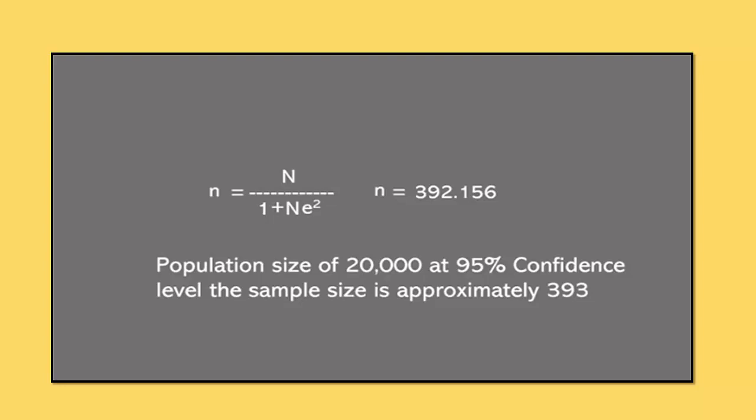Therefore when your population size is 20,000, means when your population is known and when it is finite at the 95% confidence level, then your sample size is approximately 393.